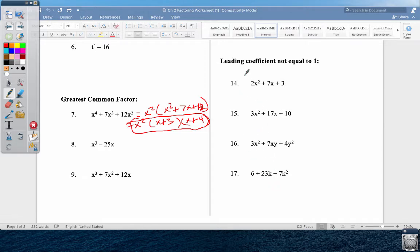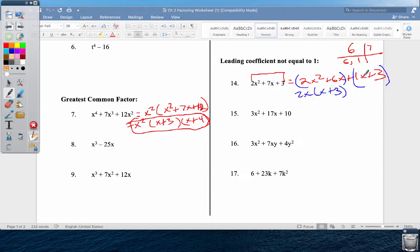This is factored completely. Remember when the lead coefficient is not equal to one, you're going to need to do two times three is six. And then what do you multiply for six and add for seven? Six and one. So now I'm gonna make this into a four-termed unit, and then we group. And group. Take a 2x out, x plus three. Can't take anything out, so I like to take a one out just to hold a place. X plus three, 2x plus one.